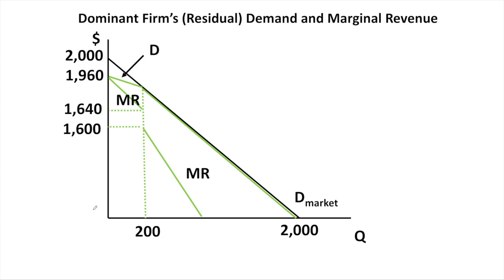We can now update the figure. We're still showing the dominant firm's residual demand curve and marginal revenue, but now we've inserted the values for those two parts of the marginal revenue curve. Using the first segment, the marginal revenue at Q equals 200 is 1,640. Over the second part, the marginal revenue at Q equals 200 is 1,600. These two values show where the break in the marginal revenue curve occurs.